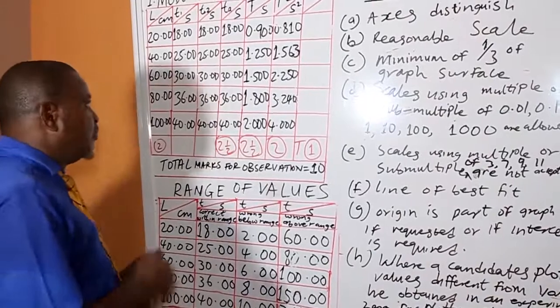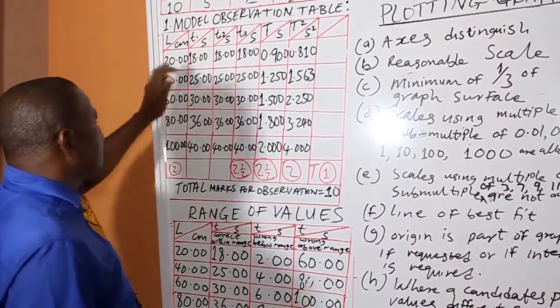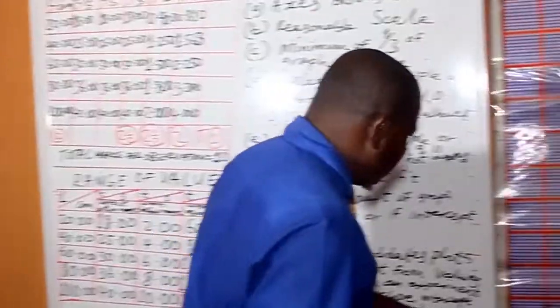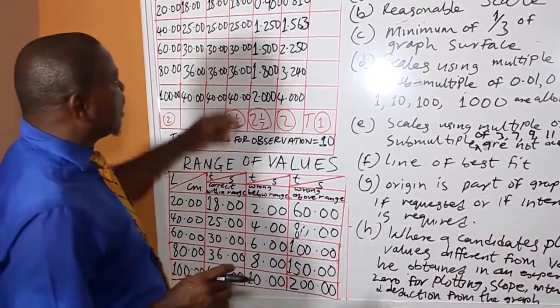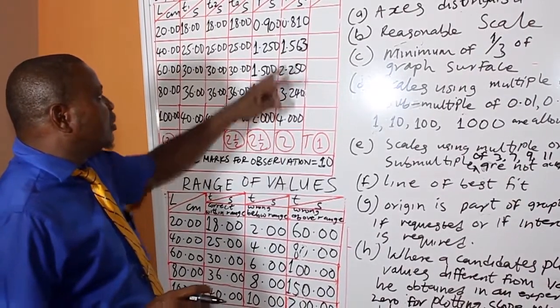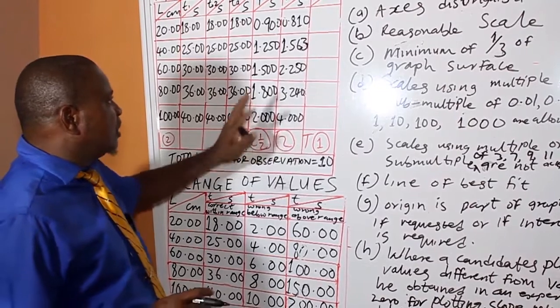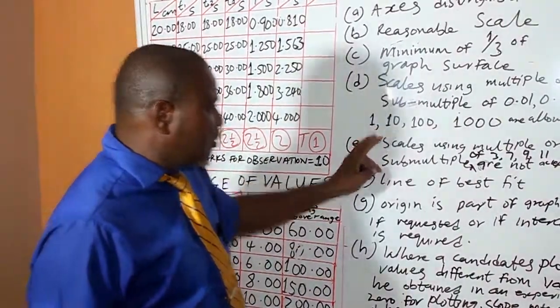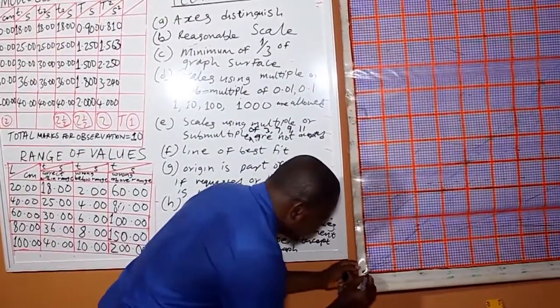Now, let us start plotting. We are plotting T-square against L. This is 4.81. Before you can choose your scale, you look at the smallest value and the highest value. The smallest value of T-square is 4.81. The highest is 4. Therefore, it is the least label to use multiple of 1 here. So this is zero.